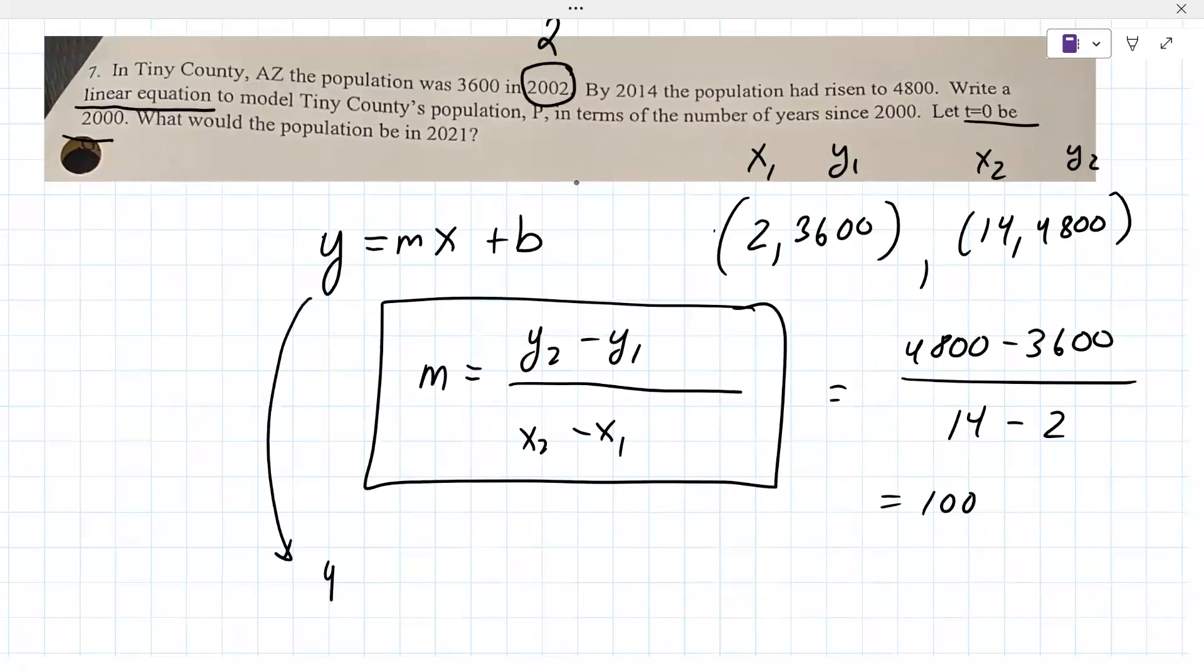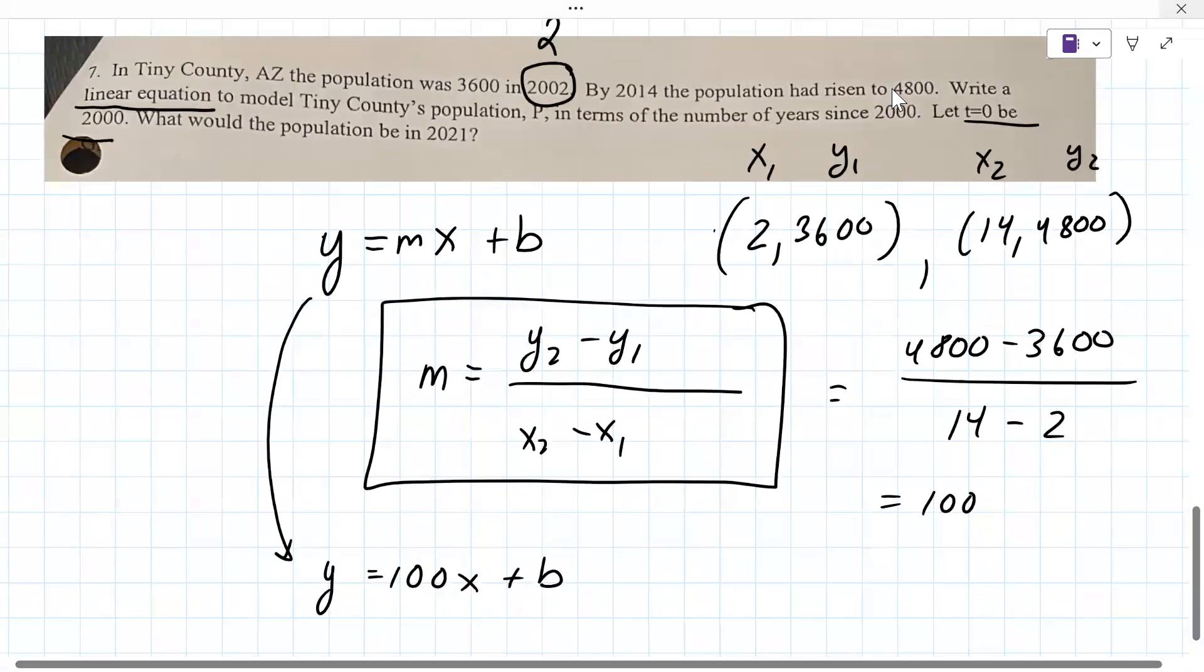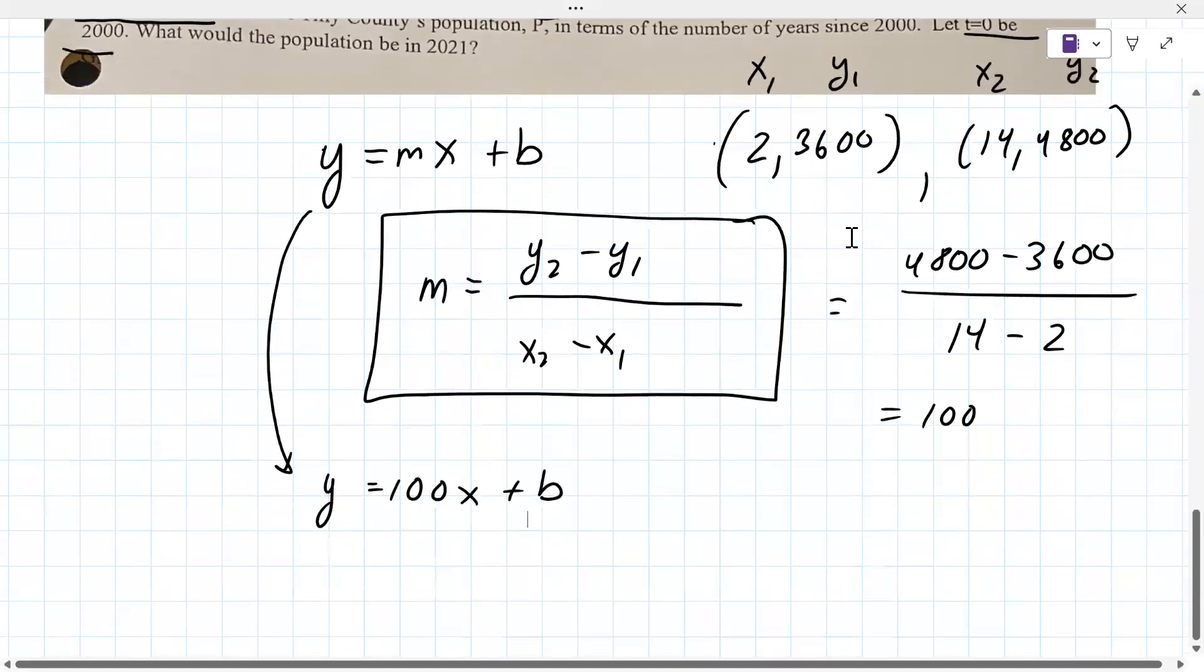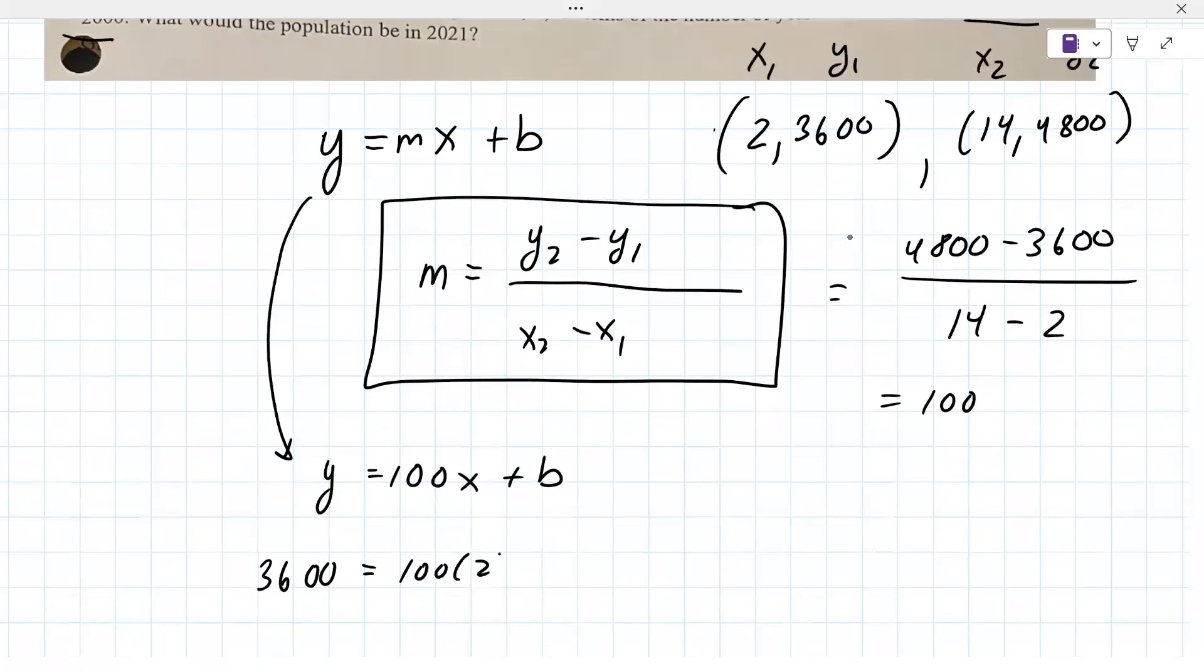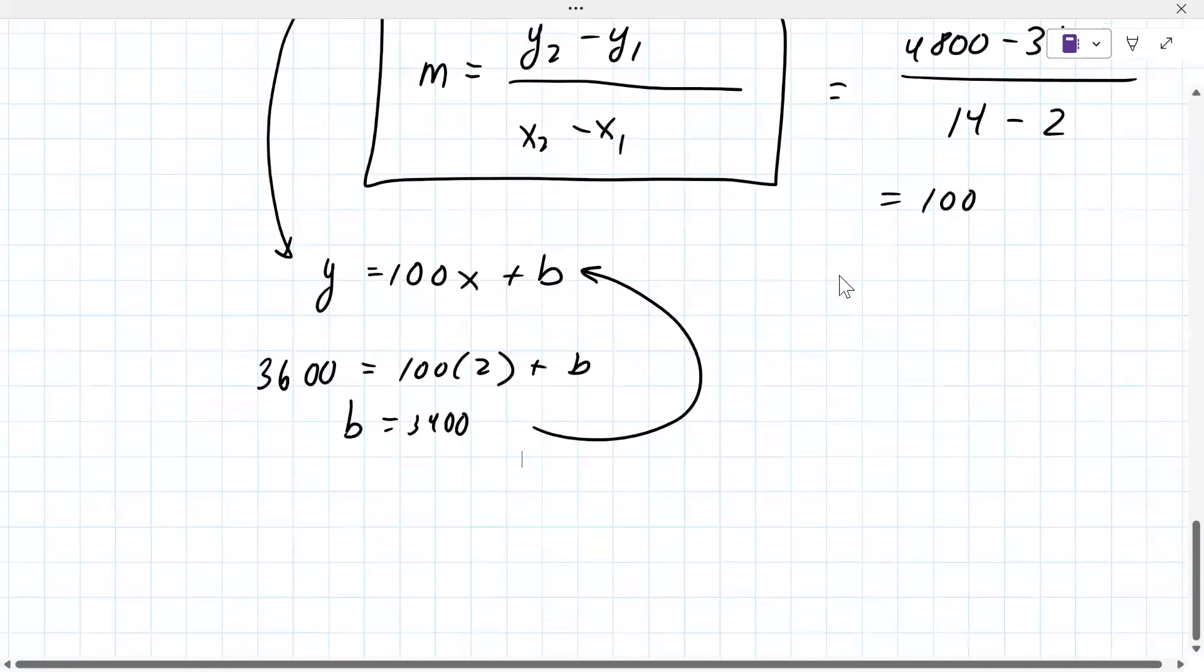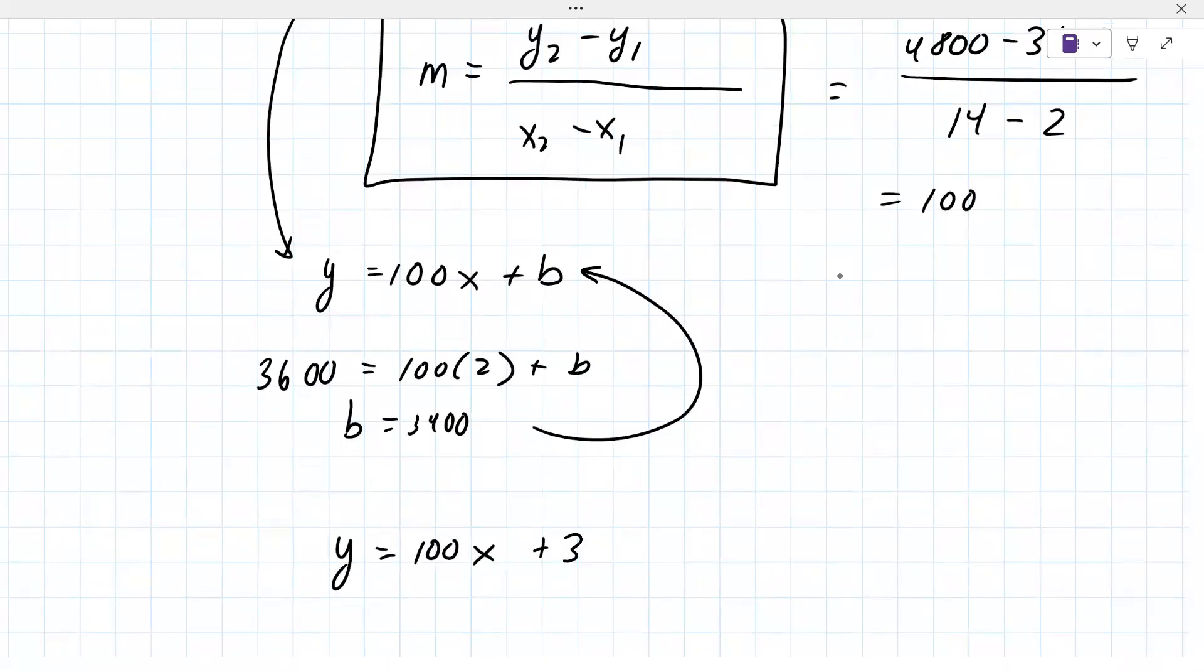So that's the first part. Y equals MX plus B. Y equals 100X plus B. And then you're going to use one of the points to find B. So let's just use the first one. 3600 equals 100 times 0 plus B. Could you solve that for B for us? Is it 3,400? Yep. So your equation is Y equals 100X plus 3400.